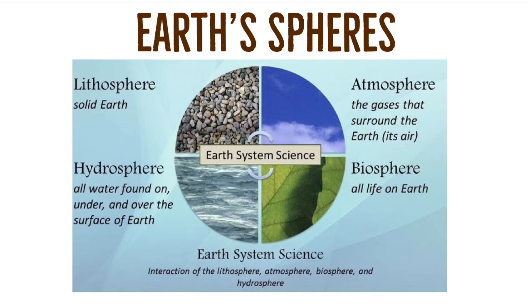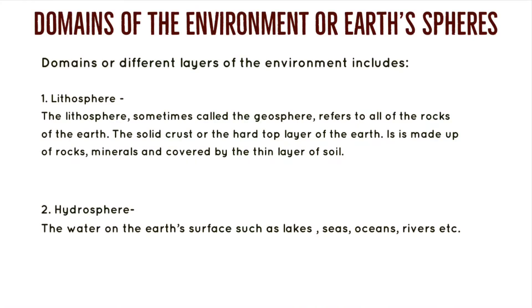The lithosphere, also called the geosphere, refers to all the rocks of the earth — the solid crust or the hard top layer. It is made up of rocks and minerals, covered by a thin layer of soil. The surface of the lithosphere is very uneven: there are high mountain ranges like the great Himalayas and the Rockies, huge plains or flat areas, and deep valleys along the ocean floor.